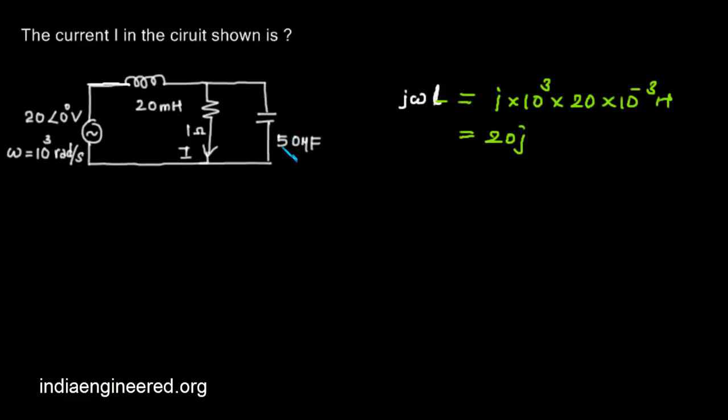Now what is the impedance offered by the capacitance? It will be 1/(jωC), that is 1 by j into this omega is 10^3 into the capacitance 15 × 10^-6. That will be 1 by j into 0.05.